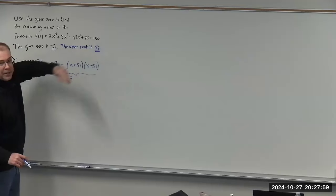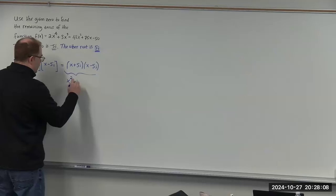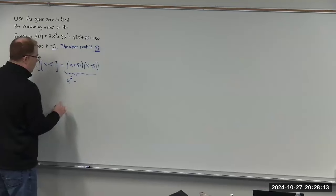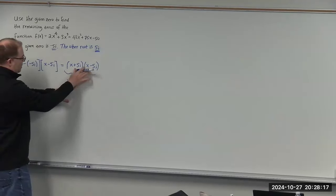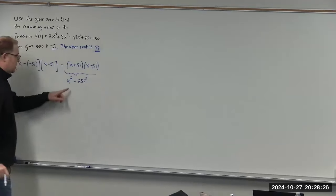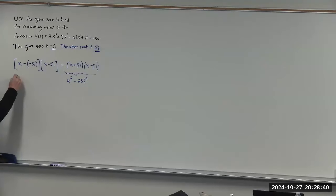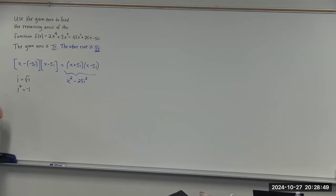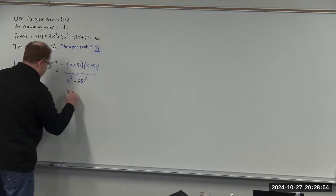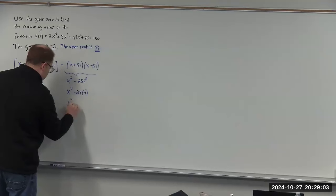Because we have a difference in signs here, think of this as a plus b times a minus b, which equals a squared minus b squared. So this is going to be x squared minus 25i squared. Remember, i equals the square root of negative 1, so if we square both sides we get i squared equals negative 1. This gives us x squared minus 25 times negative 1, which is x squared plus 25.